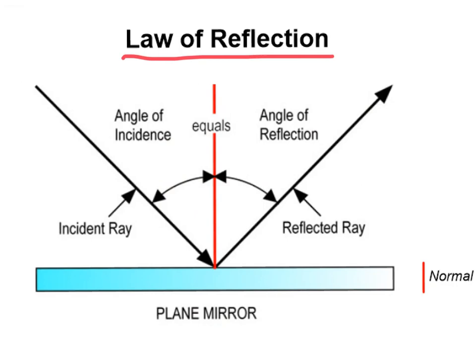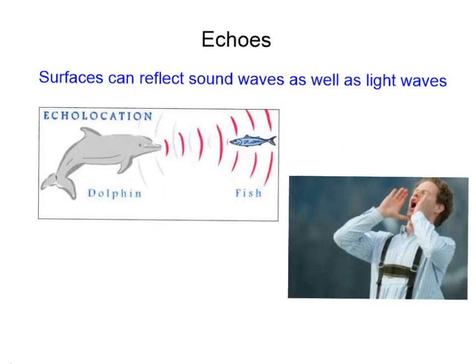The law of reflection states that these two angles are always equal. All waves obey this law whether they're light waves, sound waves, or water waves. Sound waves can also reflect, and an example of that would be echoes. Dolphins use echolocation — reflection — to determine where objects are in the water.